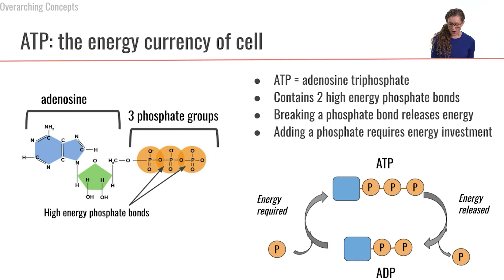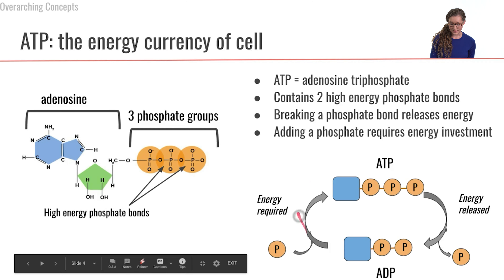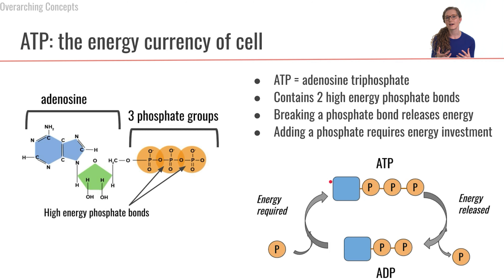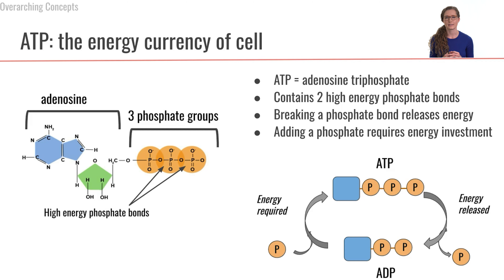When we take ADP with two phosphates and add a phosphate back to it, that is going to require an energy investment. Energy is required to add this phosphate to make ATP and to input the energy into that high-energy phosphate bond. Overall, ATP is the energy currency that our cells use — you could think of it like the money that our cells use.